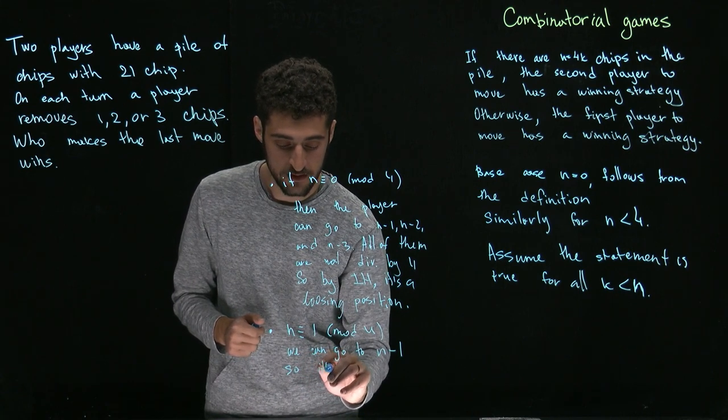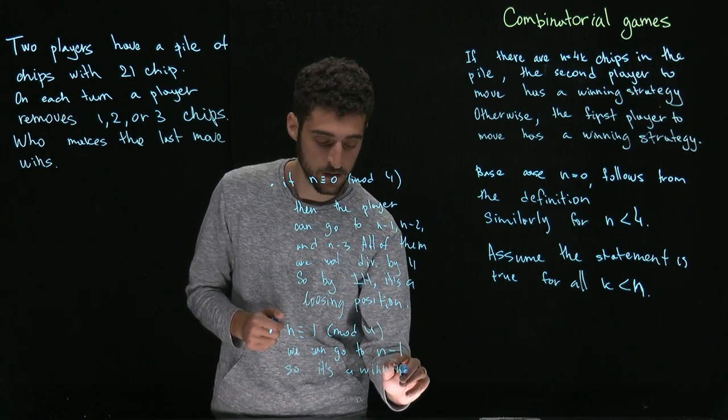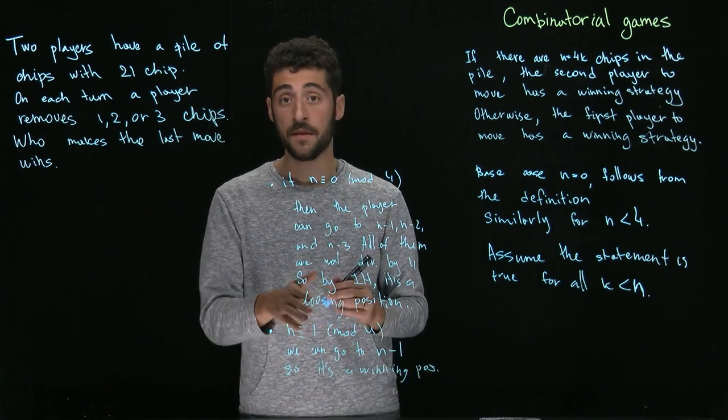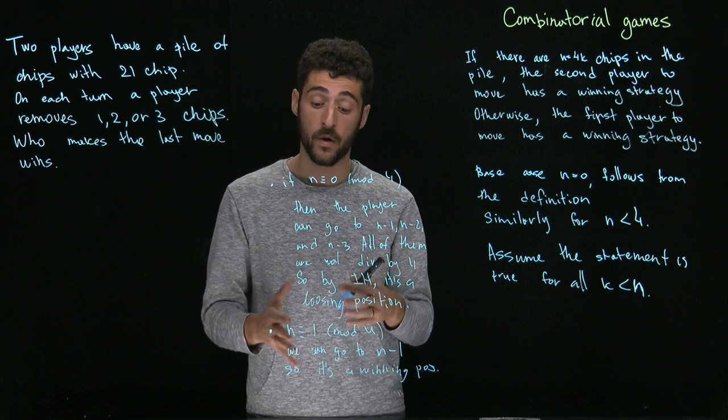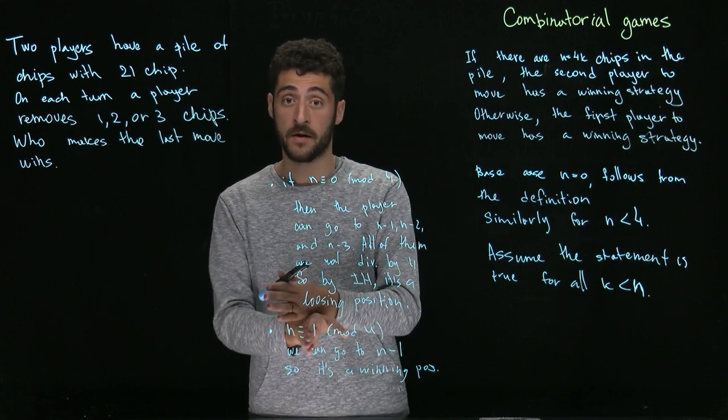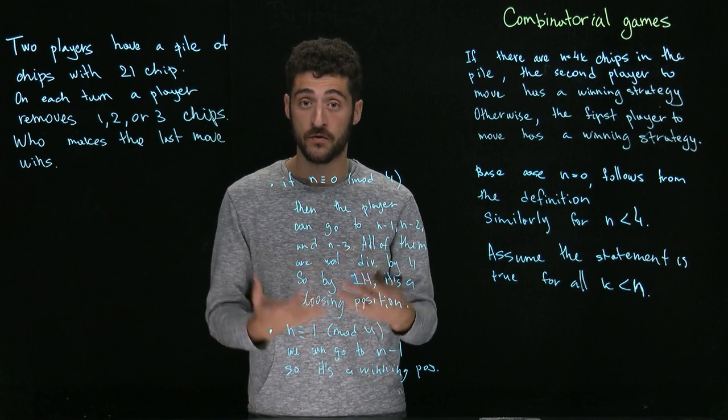So it's a winning position. And all other cases are considered in the same way. From n equal to 2 modulo 4, we can go to n minus 2, and so on and so forth.